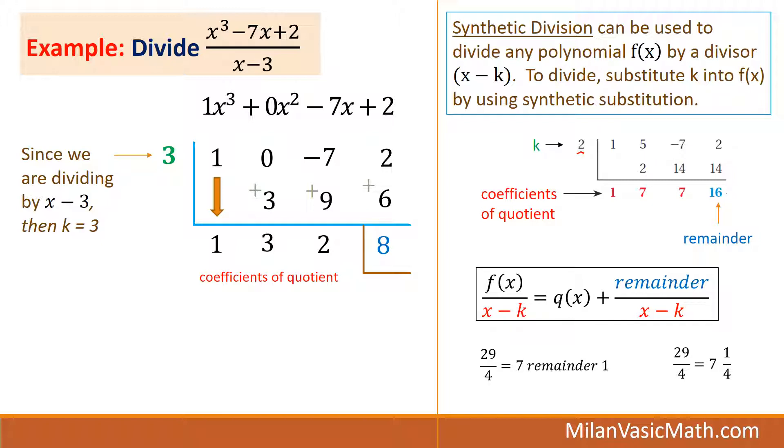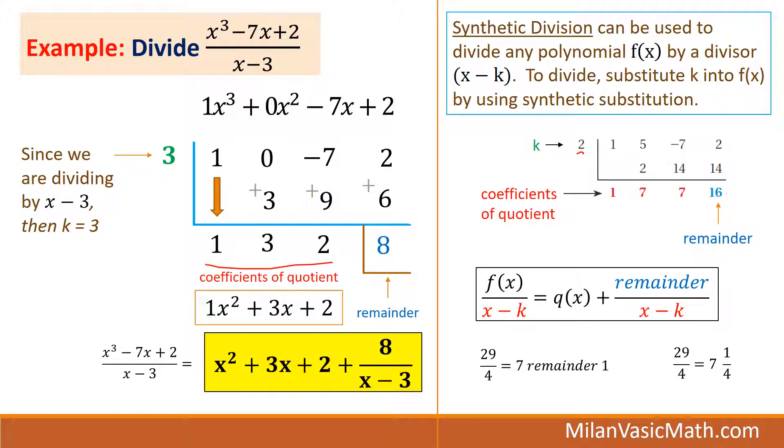Except in this problem, the 1, 3, and 2, these numbers down here, are the coefficients of the quotient. So it's 1x squared plus 3x plus 2. The last number is always the constant. The 8 is the remainder. So how do we write that? Well, here's the answer. x squared plus 3x plus 2 plus 8 over x minus 3. That's the final answer.